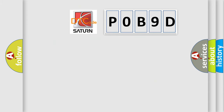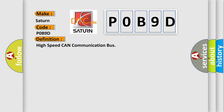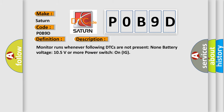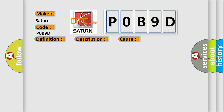So, what does the diagnostic trouble code P0B9D interpret specifically? Saturn car manufacturers. The basic definition is: high-speed CAN communication bus. The monitor runs whenever the following DTCs are not present: none. Battery voltage must be 10.5 volts or more, with power switch on IG. This diagnostic error occurs most often in these cases: CAN communication bus circuit faulty module. The Airbag Reset website aims to provide information in 52 languages.